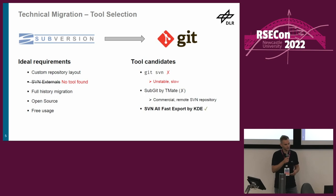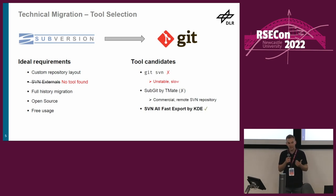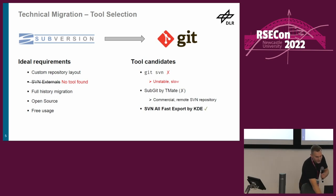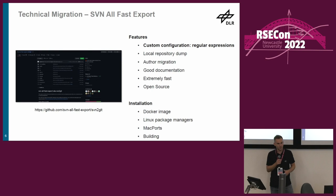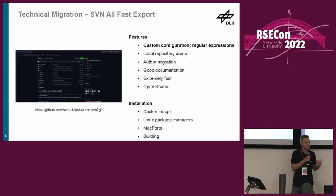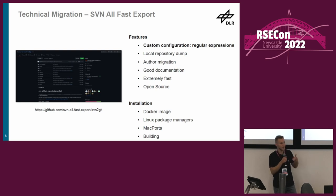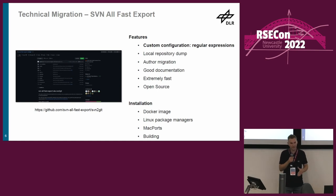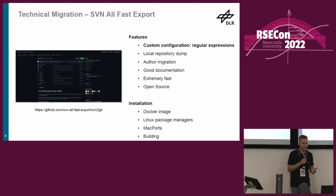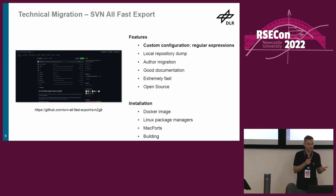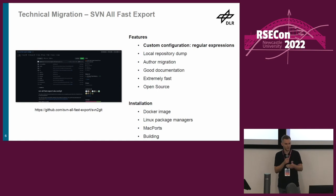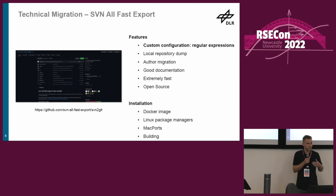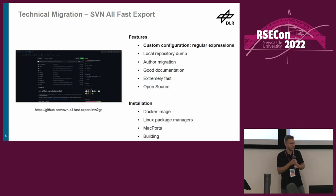The tool we are actually using is called svn-all-fast-export. It was developed by KDE to migrate their own repositories, which are even larger than ours. What I really like is that the configuration is quite powerful, because it's all based on paths and regular expressions. It uses a local repository dump, meaning you create a dump of your Subversion repository, put it on a powerful machine, and do the migration. That's why it's so fast — I could migrate all 32,000 commits in about 15 to 20 minutes. It has good documentation, is open source, migrates all author information, and can be used on Windows via Docker, on Linux, or on Mac via Macports.